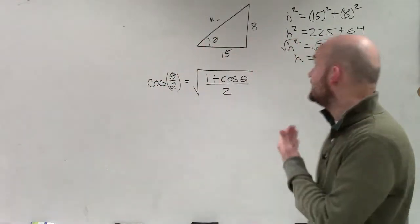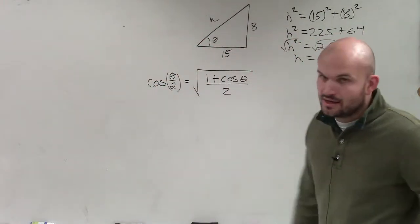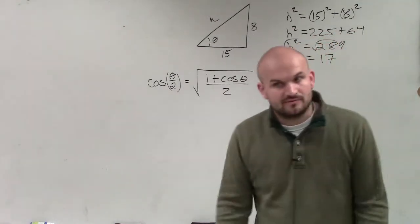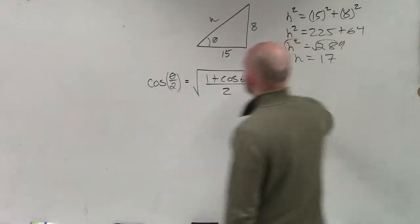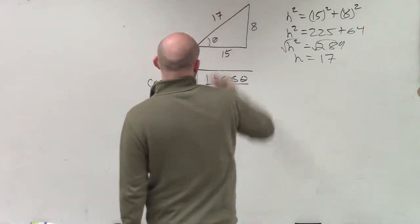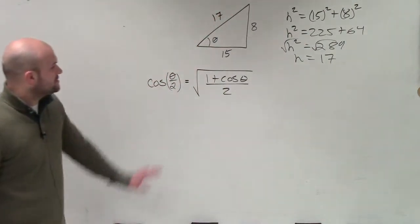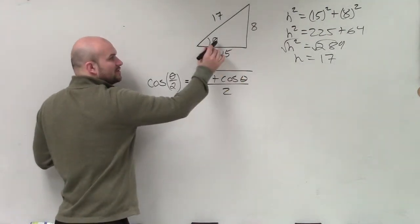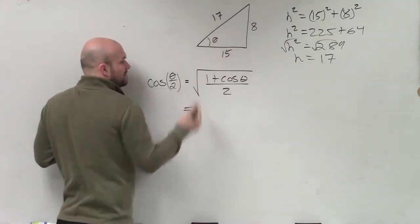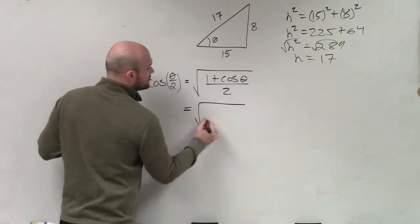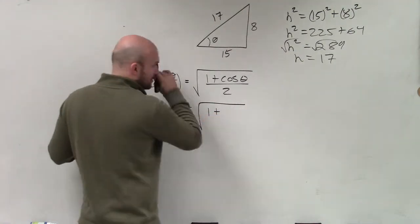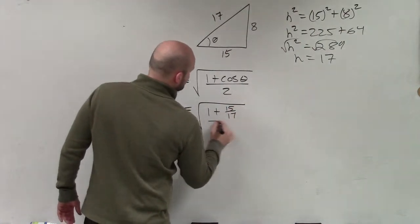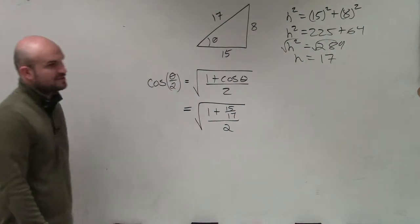This one, 8, 15, and 17. We also did 13, 5, and 12, and 3, 4, and 5. Very common Pythagorean triples you'll see. So now we can see that this is going to be 17. So now to evaluate this, I'm just going to plug in, what is the value of cosine of theta? Cosine of theta is now adjacent over hypotenuse.